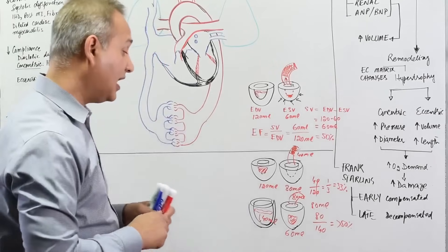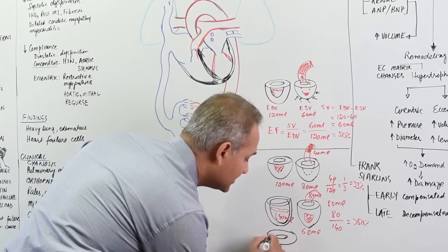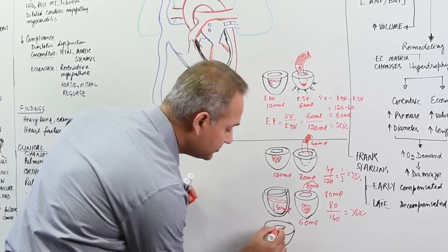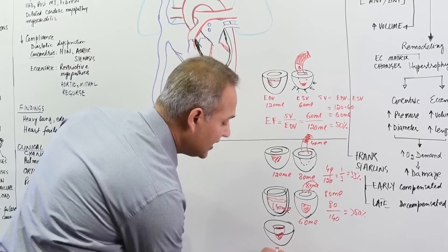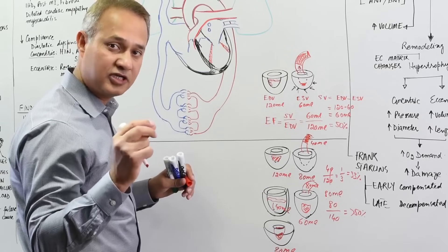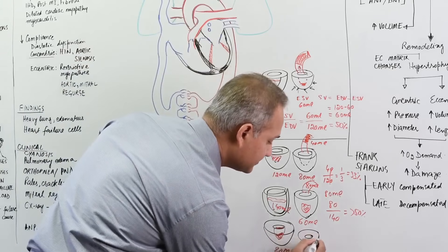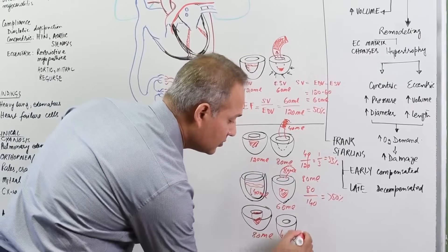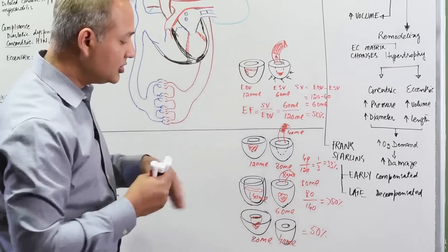Alternatively, consider a hypertrophied heart — one that is thick with a small lumen, so the cavity is small. It can only contain 80 milliliters because the ventricle has become hypertrophied. When it contracts, the end systolic volume is 40 milliliters, so 40 milliliters is ejected — 50 percent ejection fraction. However, the cardiac output is below normal.